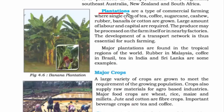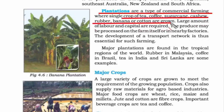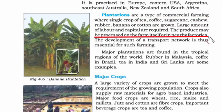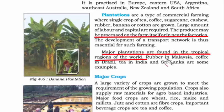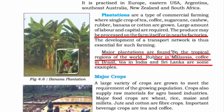Plantations are a type of commercial farming. Crops like tea, coffee, sugarcane, cashew, rubber, banana, and cotton all grow from plants and have high market value — that's why this is called commercial farming. Most of the produce is either processed on the farm itself or taken to nearby factories. Most plantations are found in the tropical region of the world because of ample sunshine. Rubber is grown in Malaysia, coffee in Brazil, and tea in India and Sri Lanka are some examples.